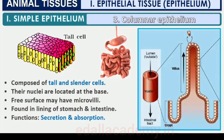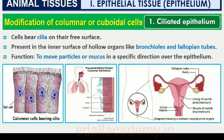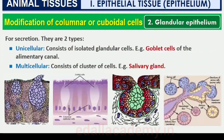Columnar epithelium is found in the lining of stomach and intestine and helps in secretion and absorption. If the columnar or cuboidal cells bear cilia on their free surface they are called ciliated epithelium, whose function is to move particles or mucus in a specific direction over the epithelium. They are mainly present in the inner surface of hollow organs like bronchioles and fallopian tubes. Some columnar or cuboidal cells get specialized for secretion and are called glandular epithelium.